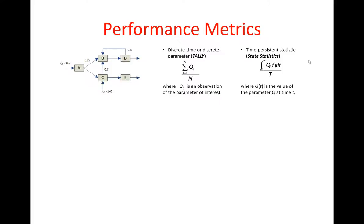On the other hand, we have time-persistent statistics or time-dependent statistics where not only we are interested in the value of the parameter but we're also interested in tracking how this value changes over time. At this time we cannot simply use an arithmetic average, but instead we need a time average to account for the duration of time that the parameter had this specific value. These statistics are implemented in Simio using state statistics.